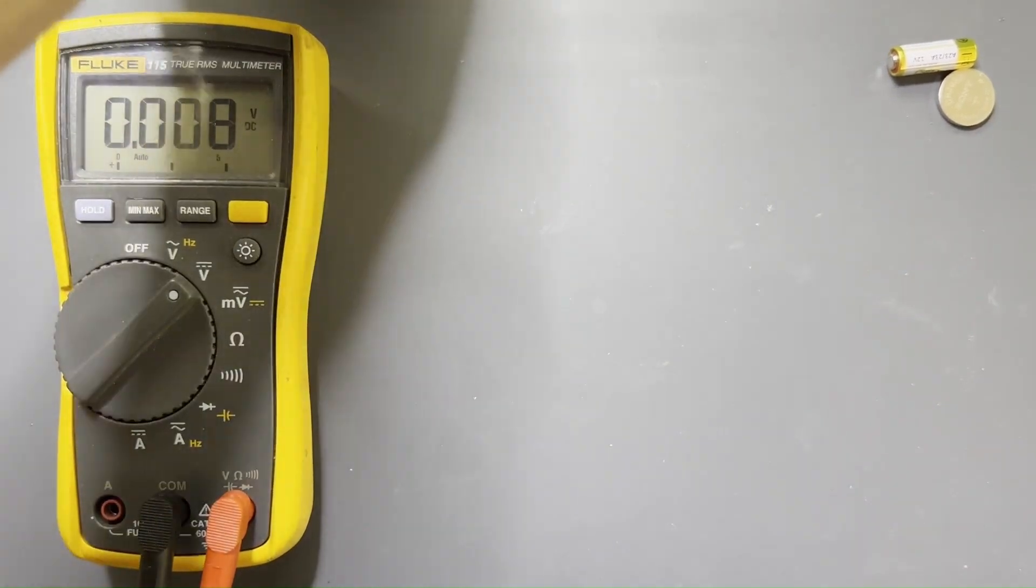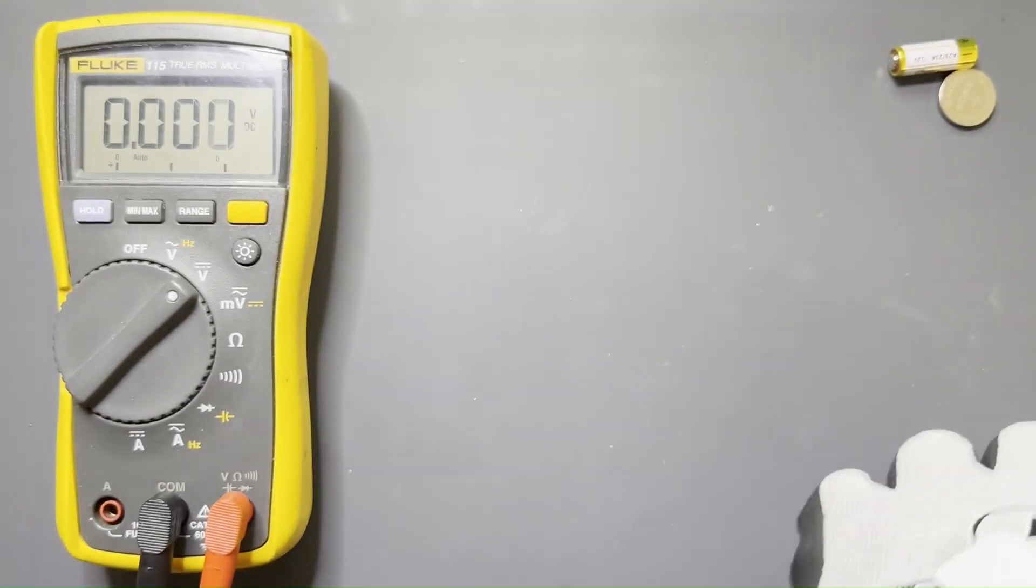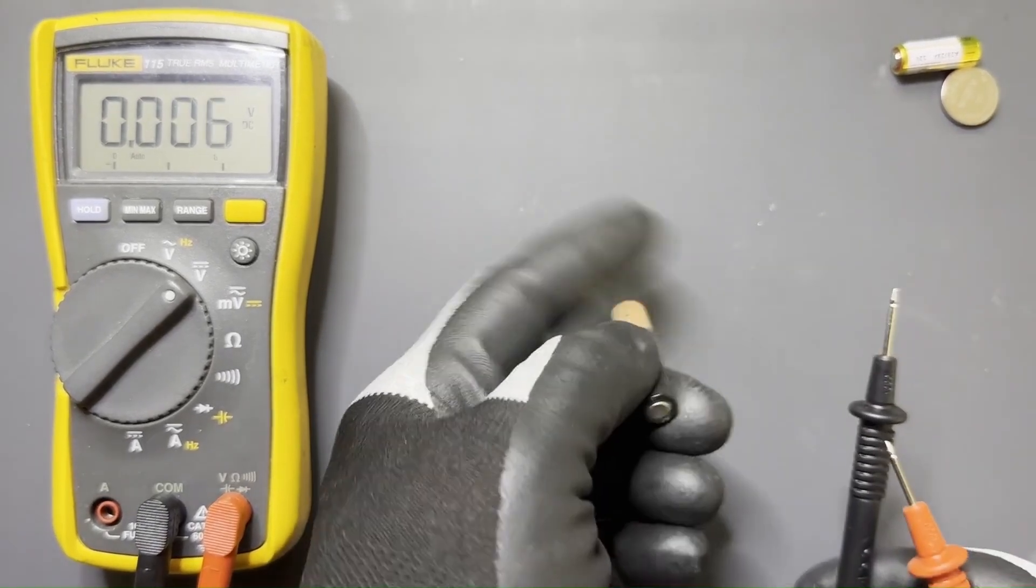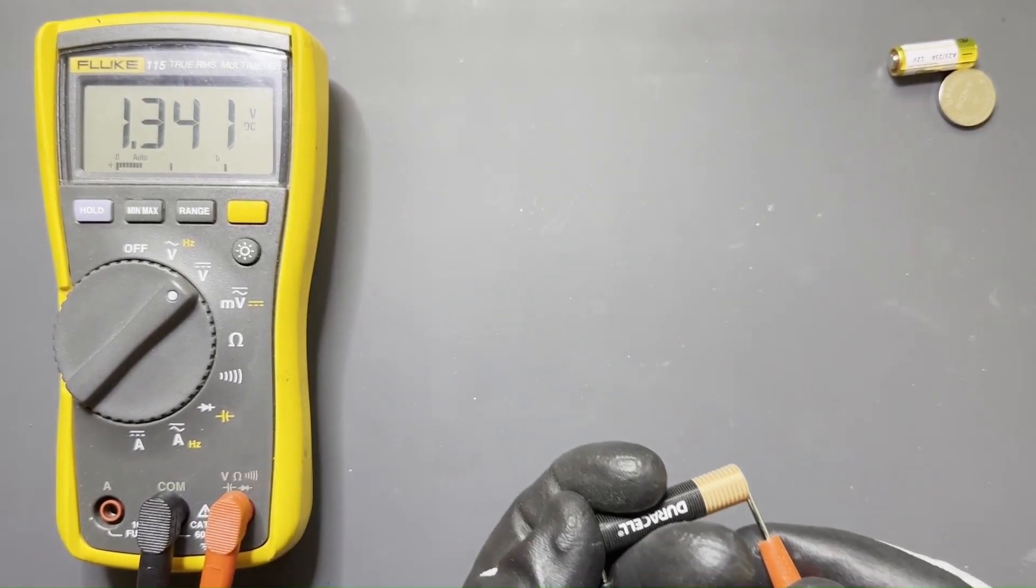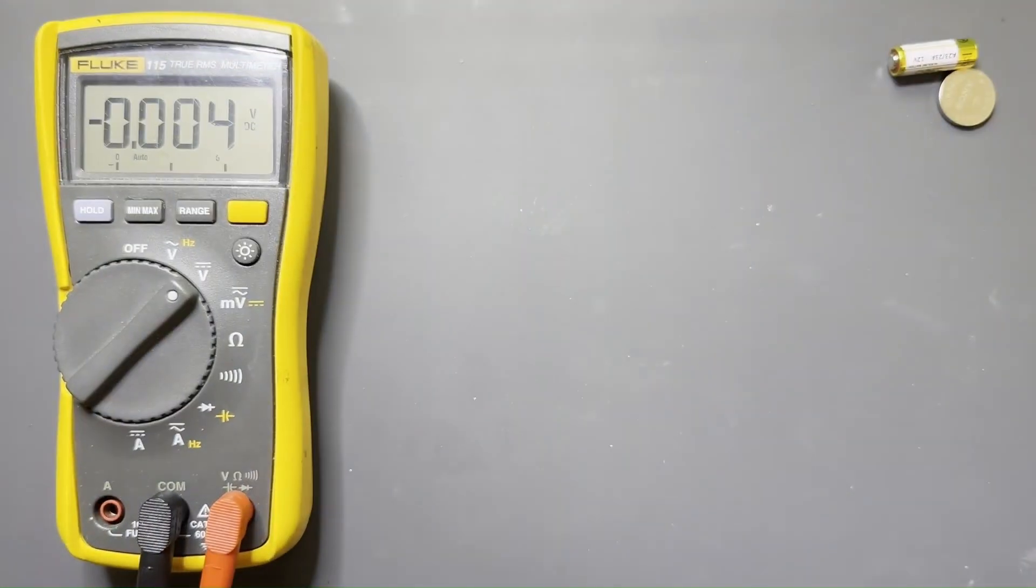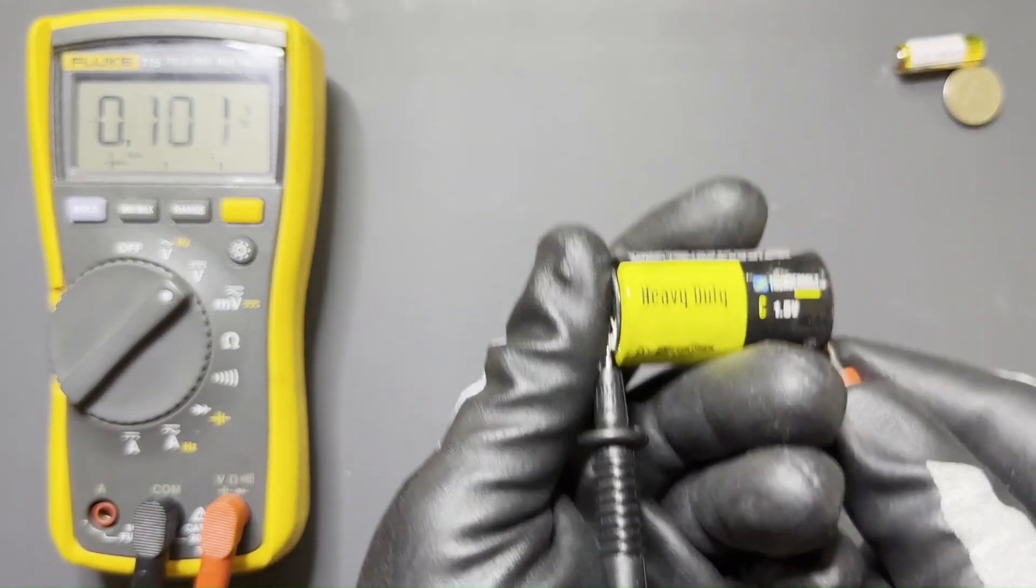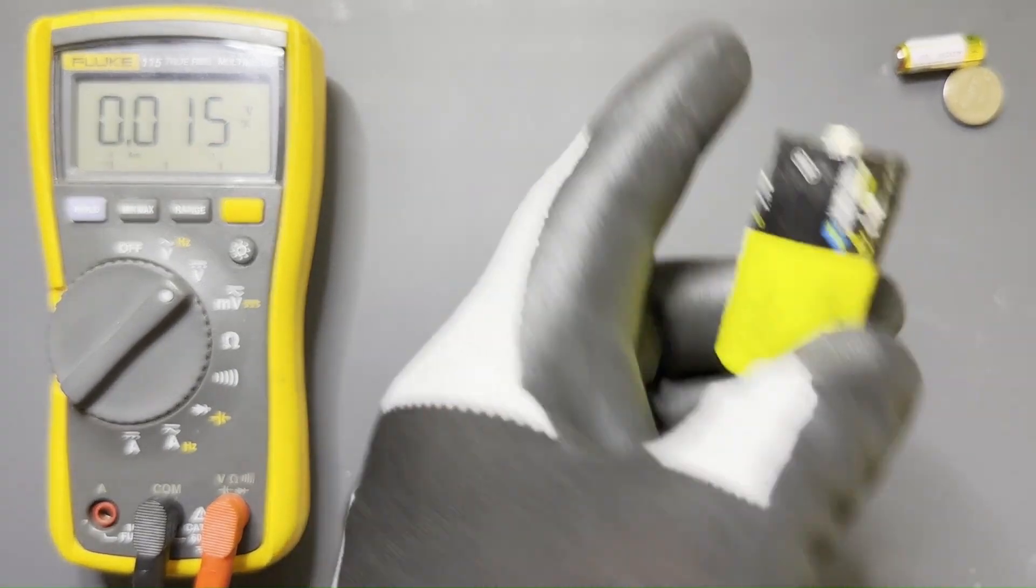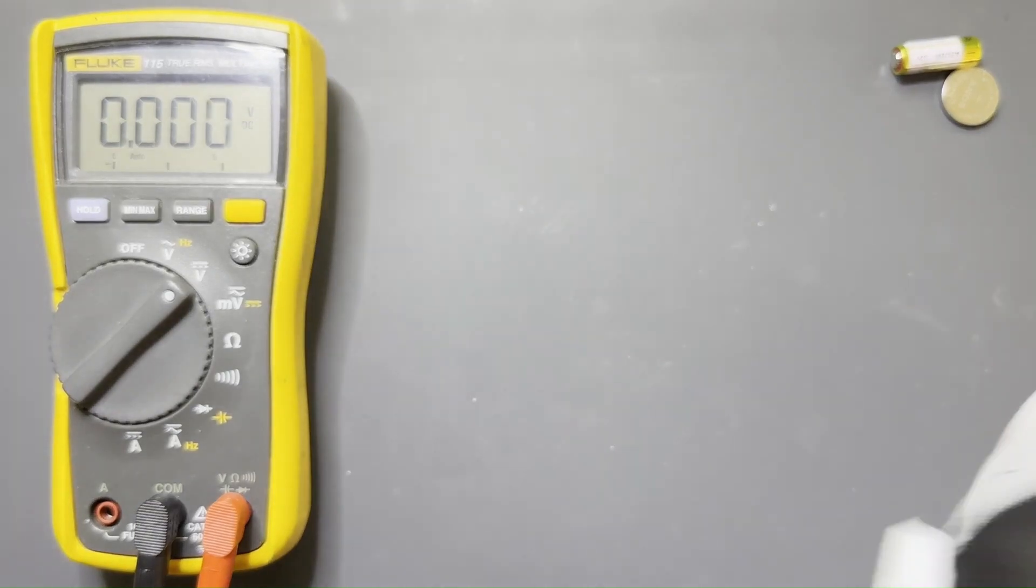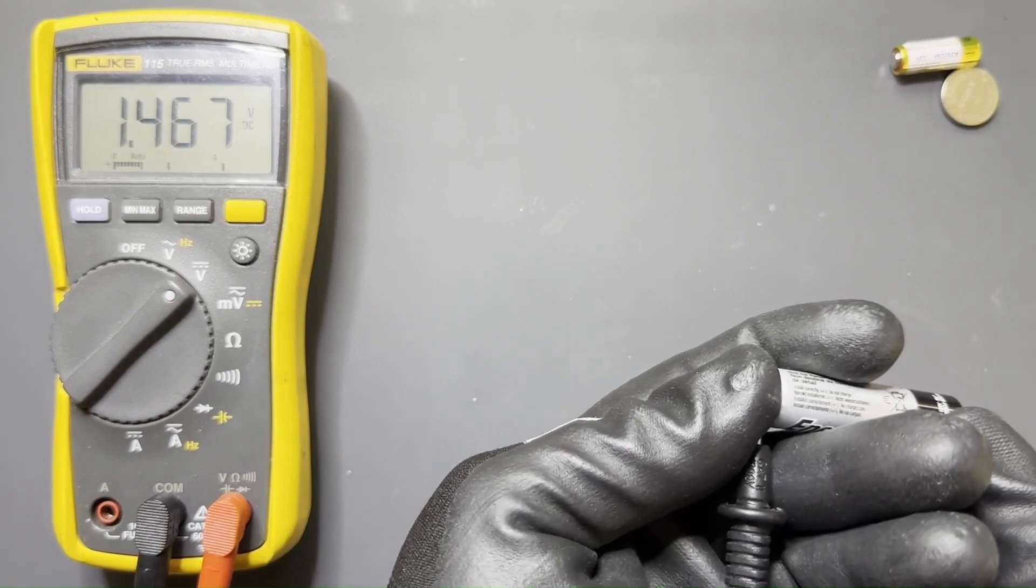So here's another - this is a AAA, should read 1.5. This is 1.34, definitely bad. Here's a D cell - I'm sorry, this is a C cell - 1.12, definitely bad.